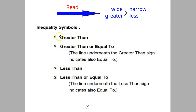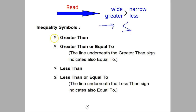First, let's look at inequality symbols. We read left to right in English, so when you come to the wider end of the inequality, we call that greater. The narrow end would be less than. If it has a line underneath it, that would be less than or equal to. This one here is greater than, greater than or equal to — kind of like a half equal sign. Less than, and then less than or equal to.